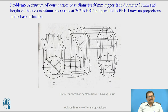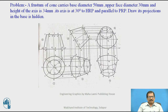The top portion is removed and the remaining part is called the frustum. So for a pentagonal pyramid or hexagonal pyramid, we will draw a horizontal sectional line parallel to the base, and the top portion will be removed depending upon the given height. Now we are drawing projections of a frustum of a cone with base diameter 50 mm, upper face diameter 30 mm, and height of axis 34 mm. Its axis is at 30 degrees to HP and parallel to VP, with the base hidden.